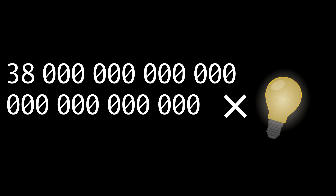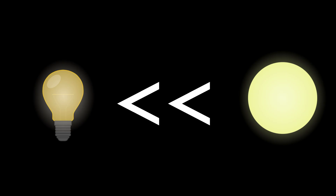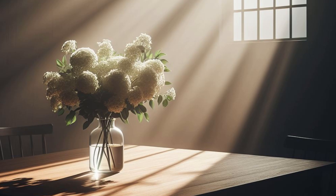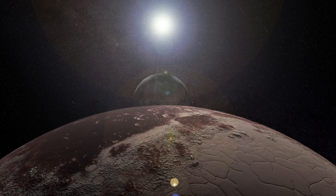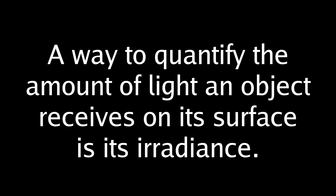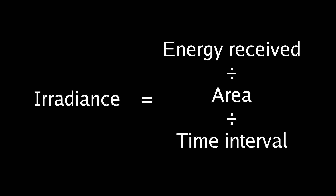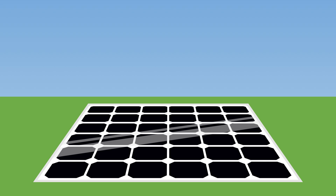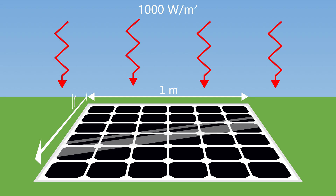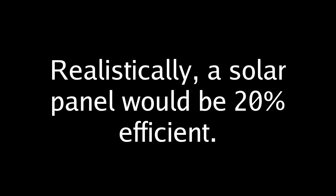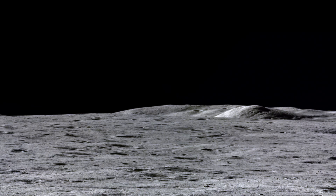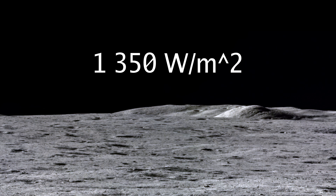That is 38 septillion times brighter than a light bulb. As you can tell, the sun is far, far brighter than a light bulb. But how well it illuminates a surface depends not only on how bright the light source is — like how planets further away from the sun get less light and are colder. A useful way of quantifying how much light an object receives on its surface is its irradiance — the amount of energy the surface receives over a given area over a given time interval, typically measured in watts per meter squared. Imagine you had a 100% efficient solar panel with an area of 1 square meter and the irradiance from the sun was 1000 watts per meter squared — it would have an output power of 1000 watts. Realistically, a solar panel would be 20% efficient, so it would have an output power of 200 watts. When the sun is directly overhead on the surface of the moon, the irradiance would be about 1350 watts per meter squared.